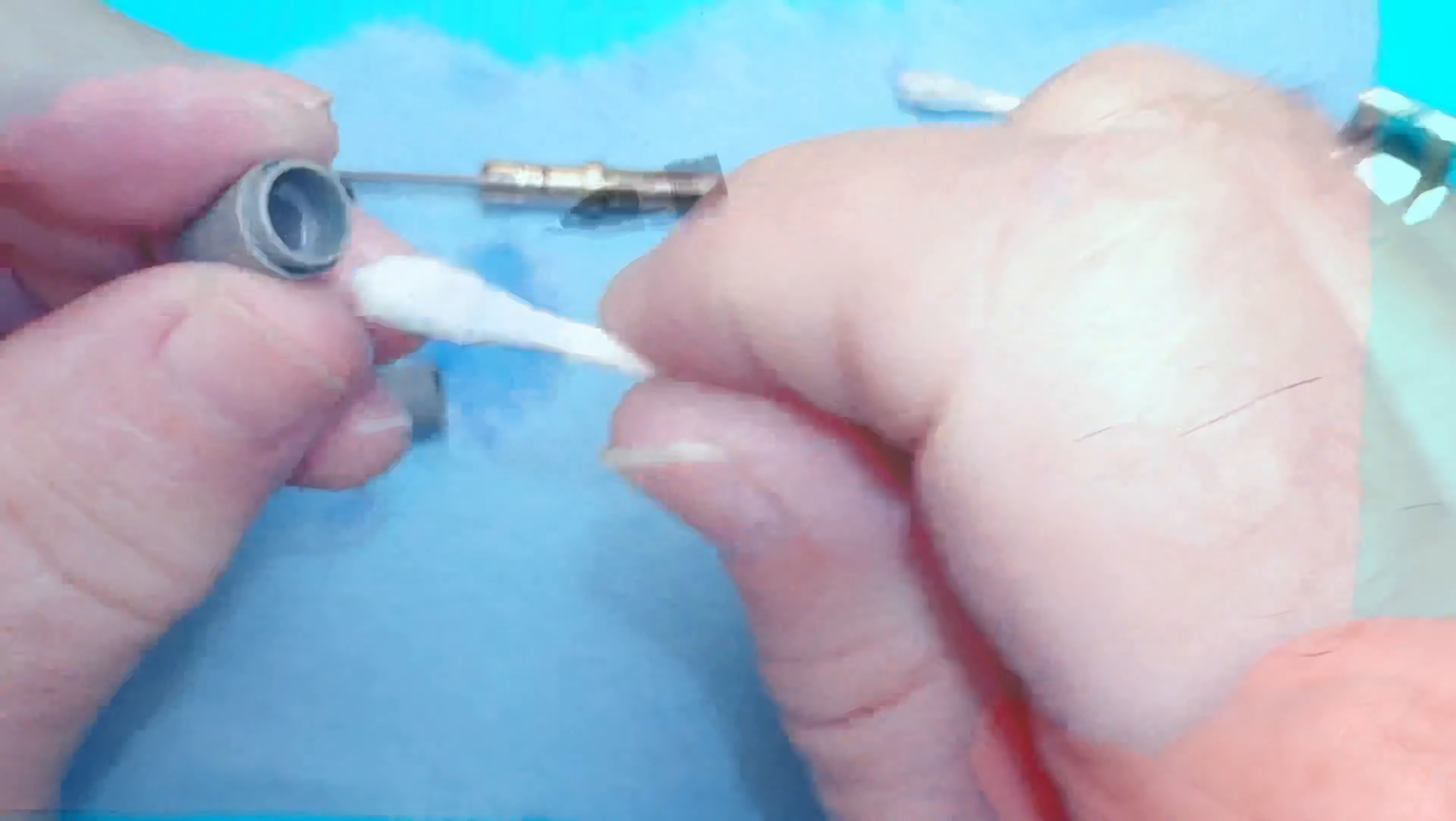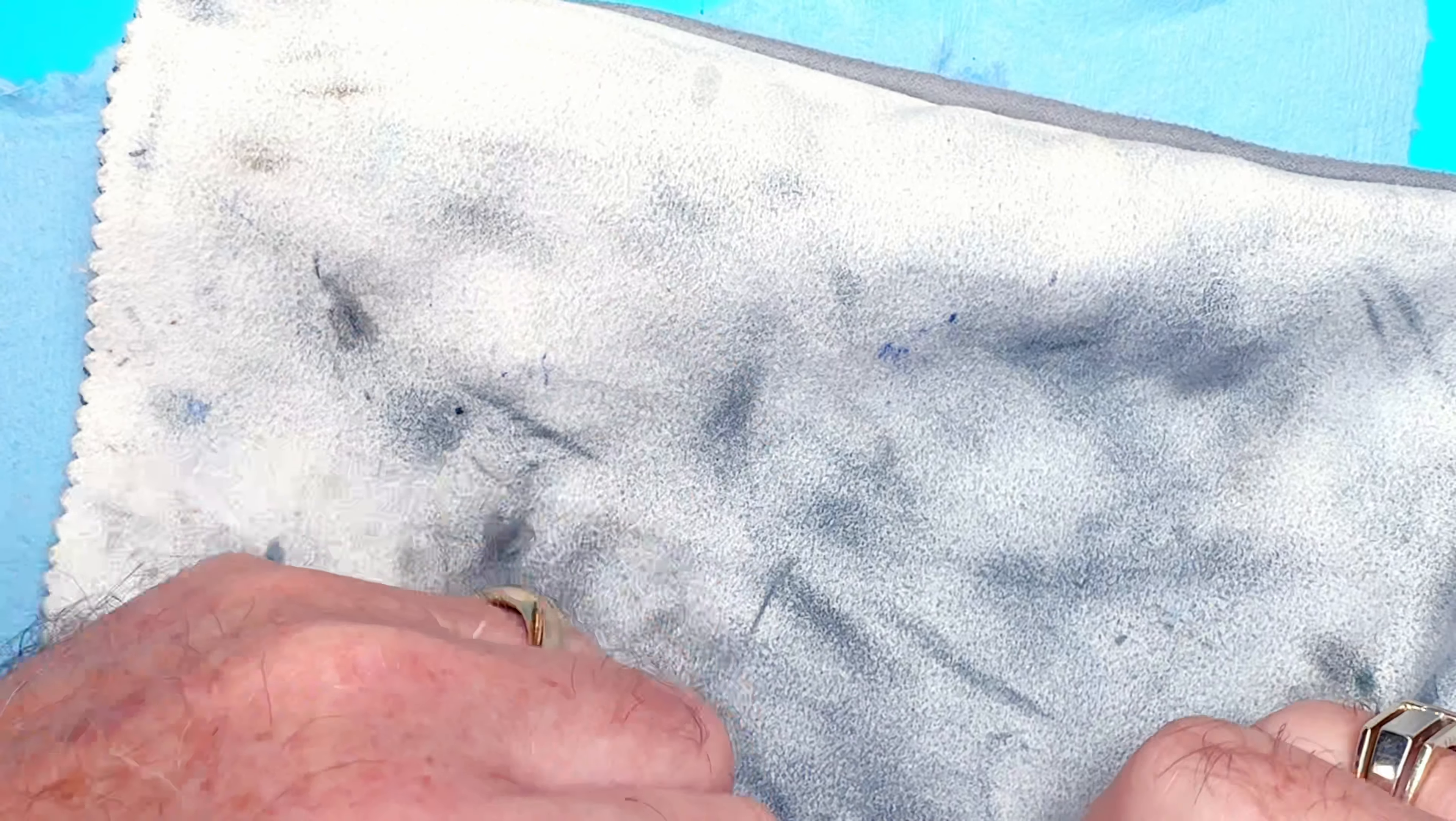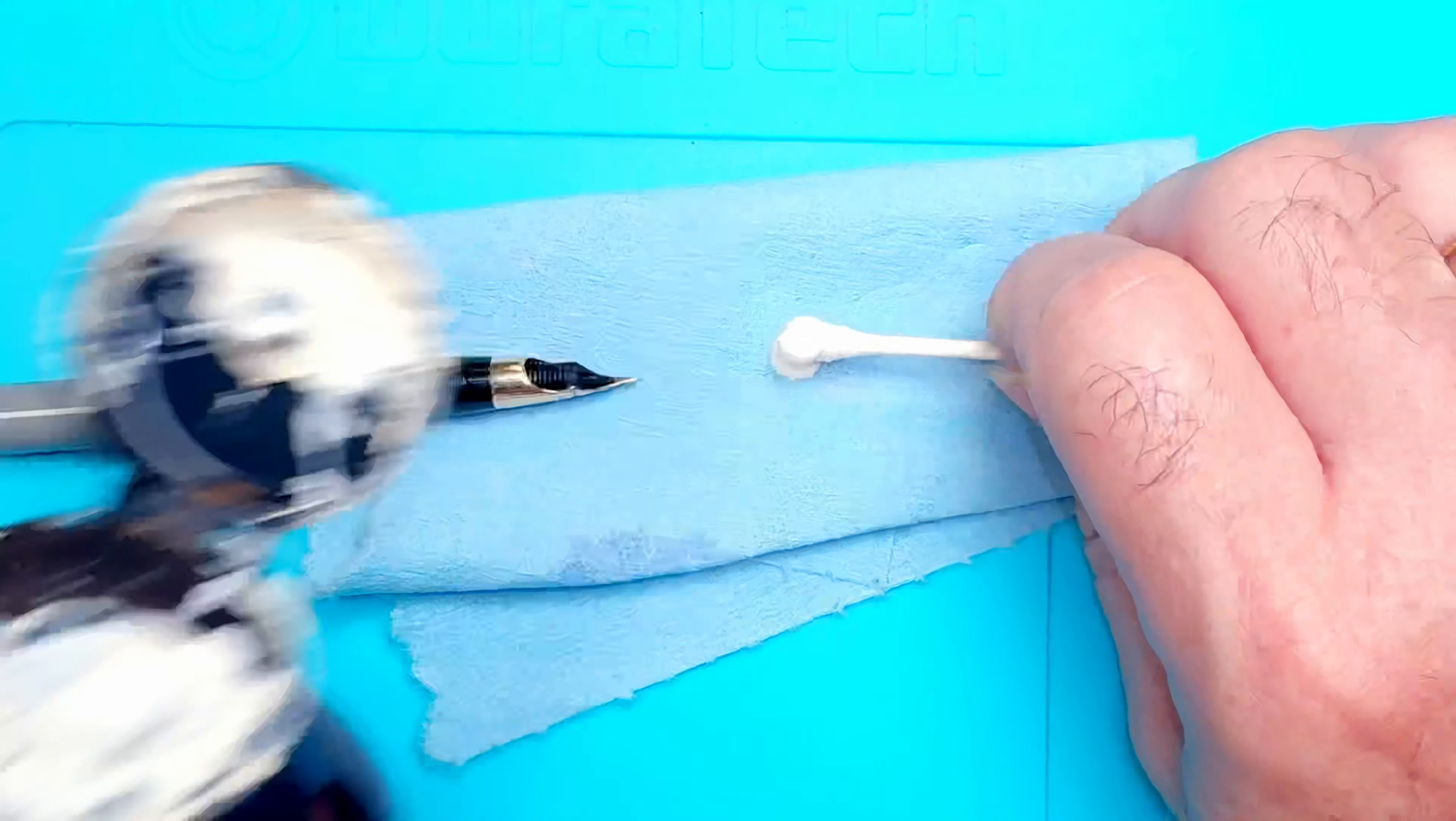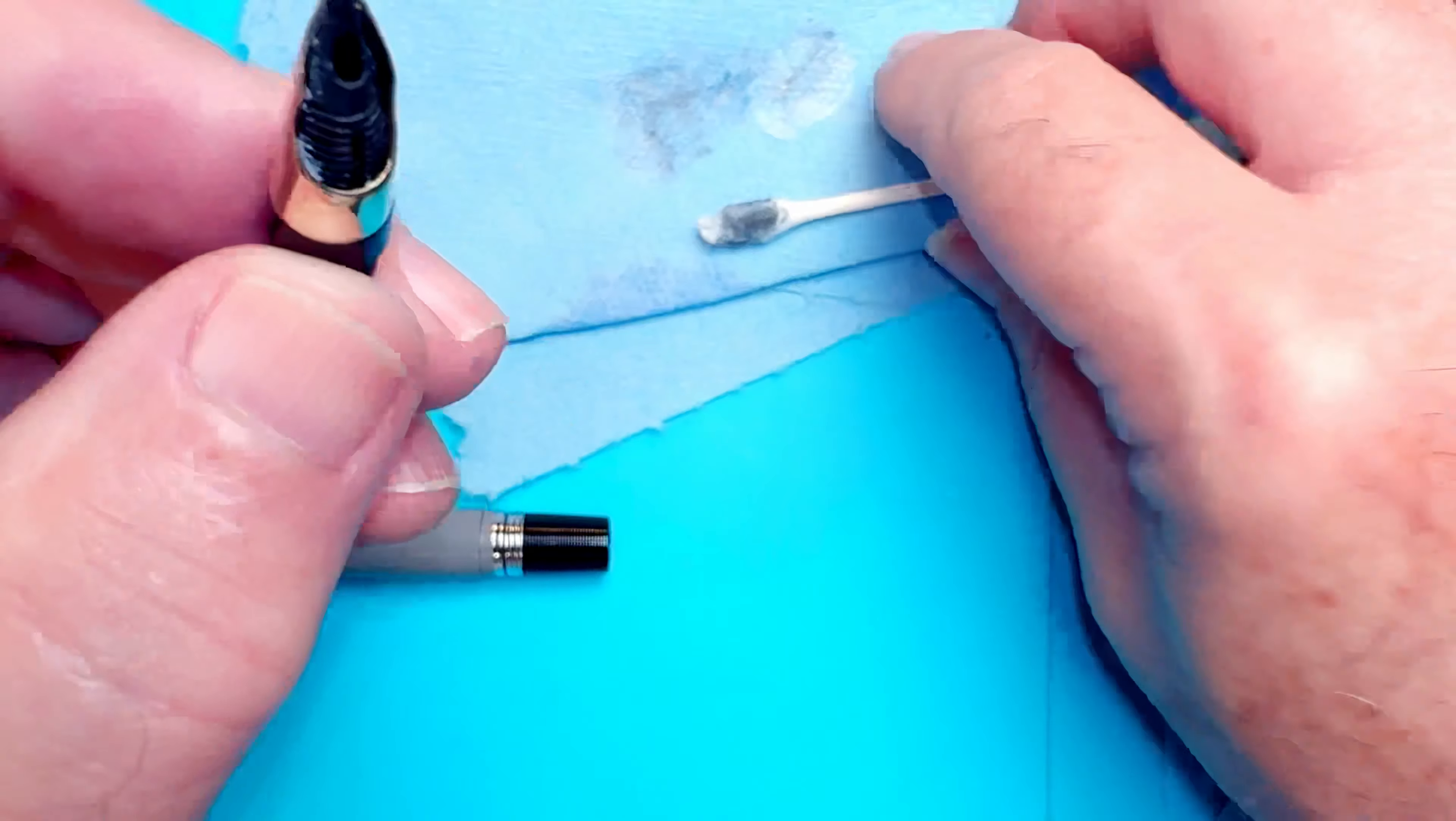Same thing with the blind cap. So now I'm going to polish up that 14 karat gold nib. I might put it back in the section and put the barrel back on to give me more leverage and I'll be able to dip test that nib as well. Here's looking pretty shiny but there's still a few micro scratches so I'm going to put a little metal polish on that and try to get some of the micro scratches out. There we go, it's gotten a lot of those micro abrasions out.